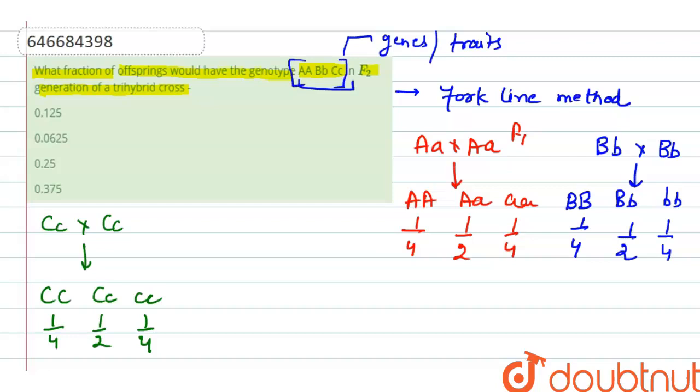Let's note down: AaBbCc. The fraction of Aa is 1/4, as we have gotten here. For Bb, it is 50%, that is 1/2. We will multiply this. Next, Cc is again 50%, as it is heterozygous, so we will also get 1/2.